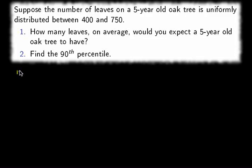The number of leaves on a tree is uniformly distributed with a minimum of 400 and a maximum of 750. And because we're asked for how many leaves on average, this means if we looked at lots and lots of five-year-old oak trees, what would we expect the average number of leaves to be?